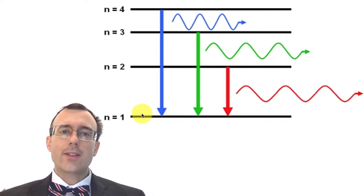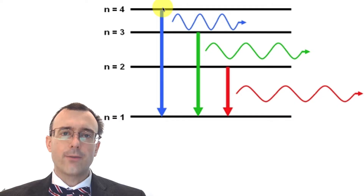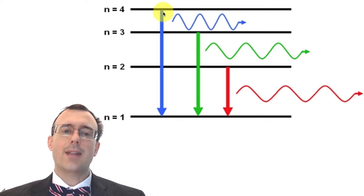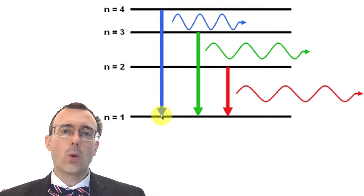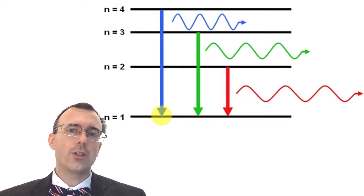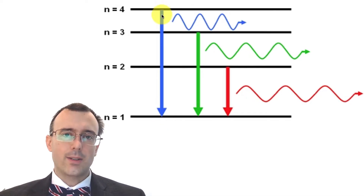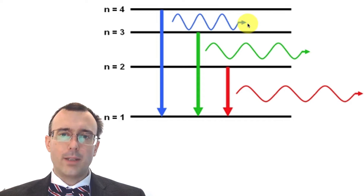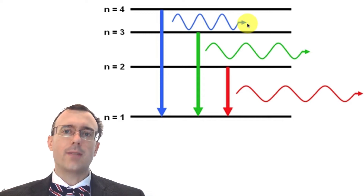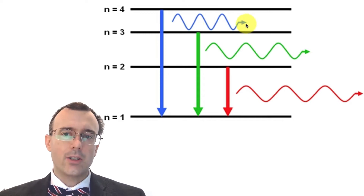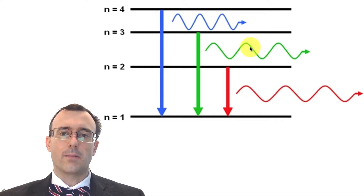The same thing happens when an electron in energy level four drops down to energy level one. We would expect even more energy to be lost and converted into light — and that's exactly what we see: blue light is given off, which is even higher in energy and higher frequency than green.